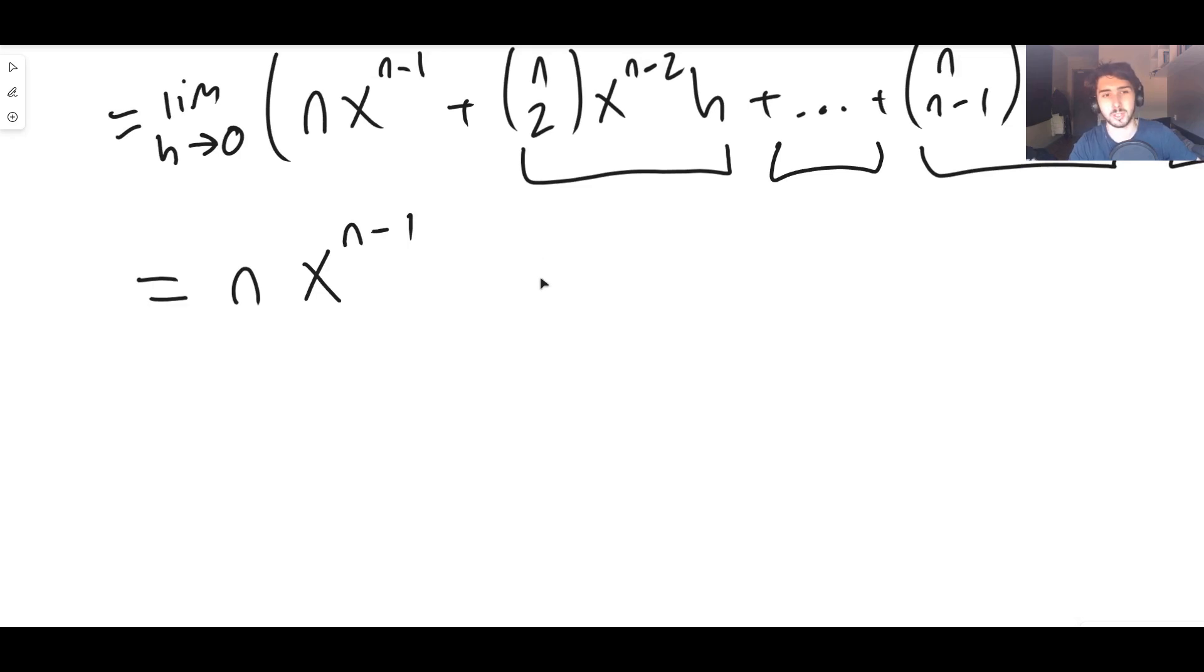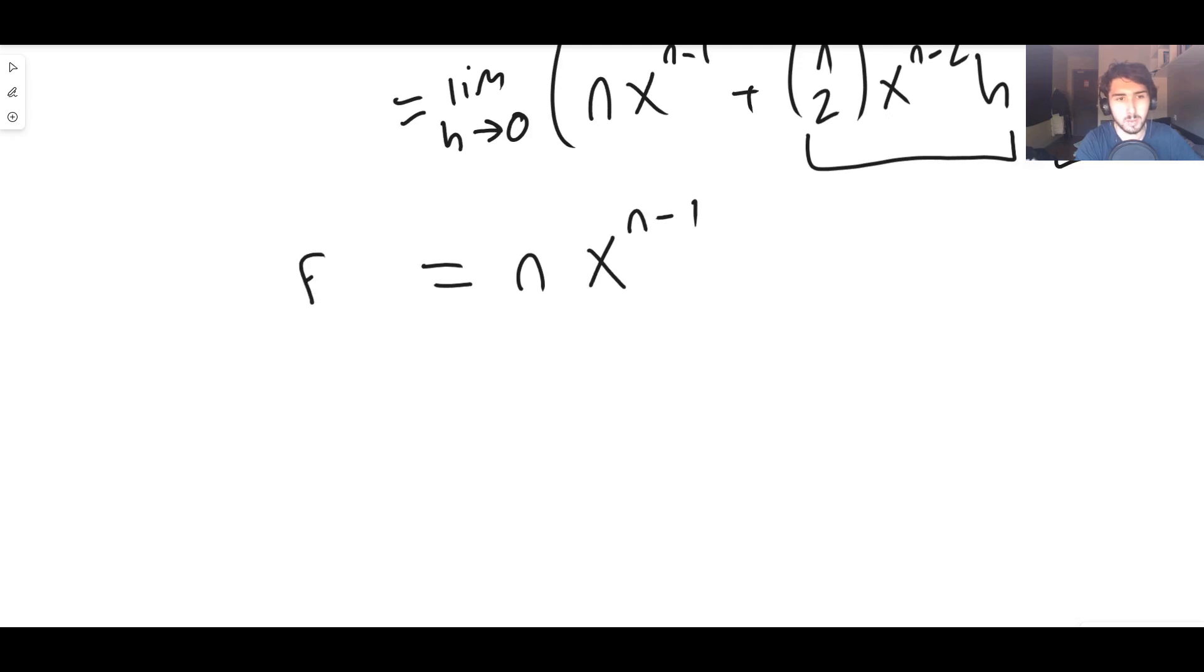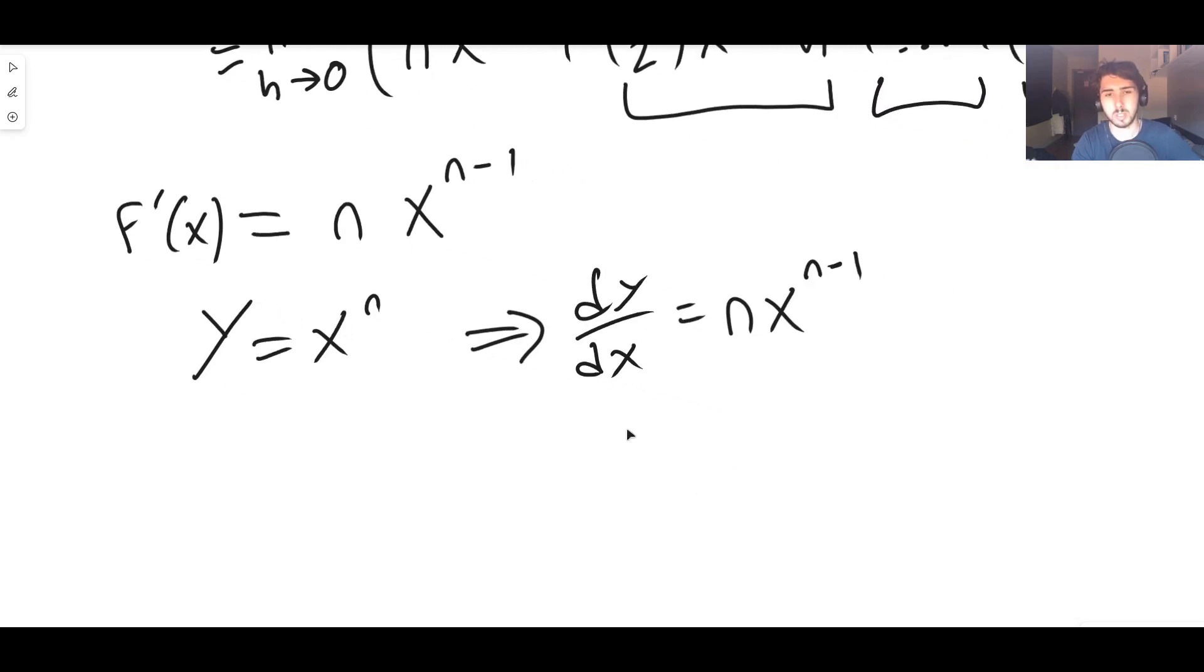So you can prove this for natural numbers using the binomial expansion, as I have just done. That shows you then that the derivative is n x to the n minus one, which means if y is x to the n, dy/dx is n x to the n minus one. It's also good practice with using the definition of the derivative to solve problems. Thank you guys so much for watching, I hope you found that helpful, and I'll see you in the next video. Cheers.